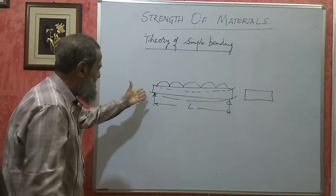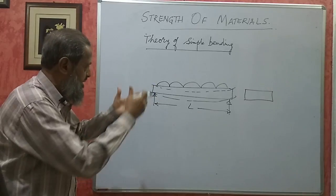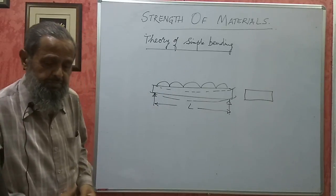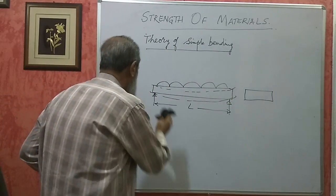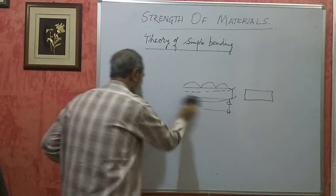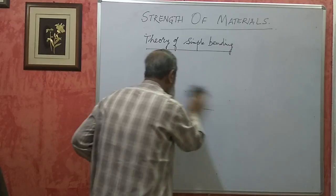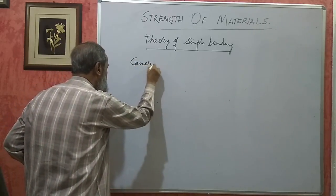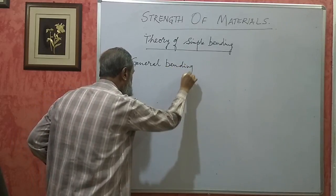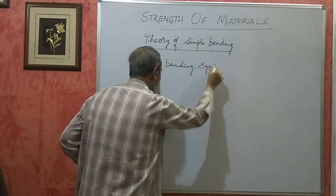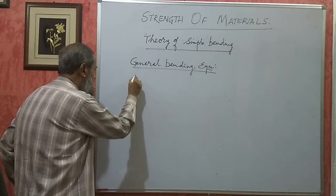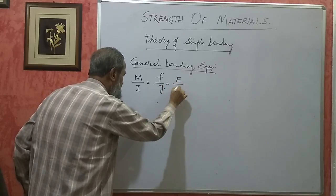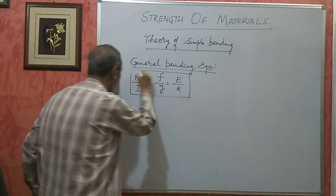Any problem on beams which we come across in buildings and structures, we have to use the Theory of Simple Bending. In this theory, we use an equation known as the general bending equation. This equation is: M by I is equal to F by Y is equal to E by R. This we call the general bending equation.